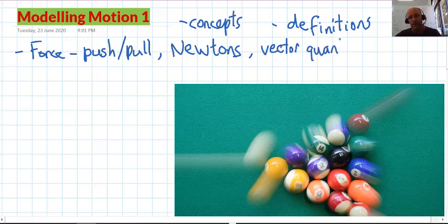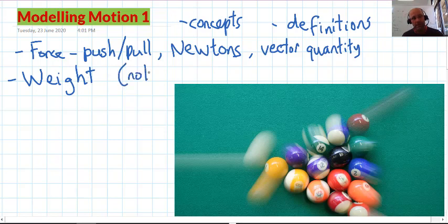One commonly referred to type of force is weight. Weight is not mass, although it is related to mass. Mass is a scalar and it's the amount of substance in a body. So it is not the same as mass. Weight is a force and it's also measured in Newtons.